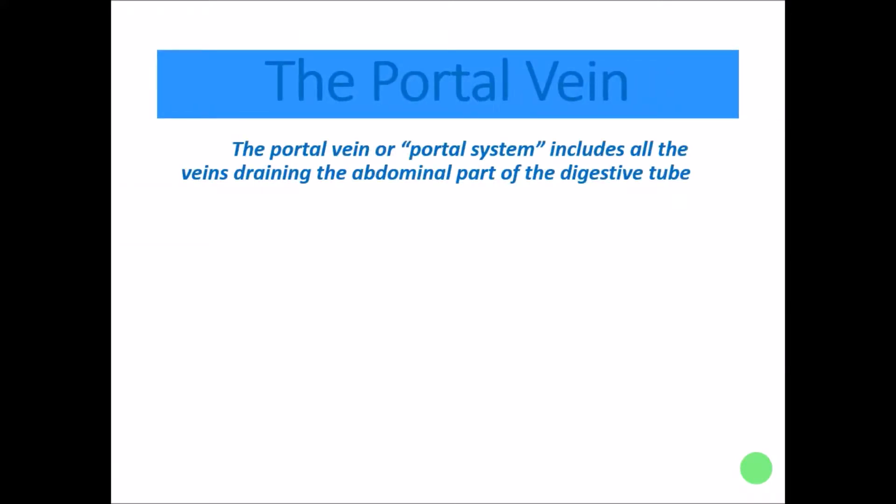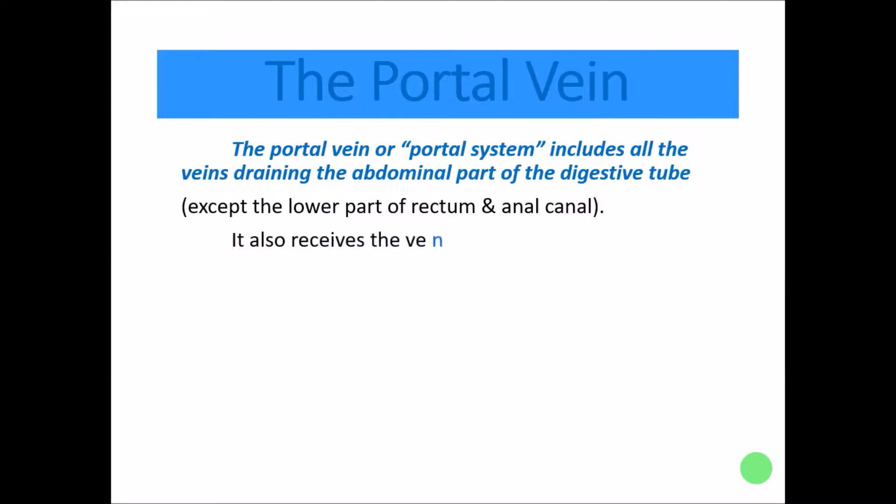The portal vein — the portal system — consists of all the veins draining the abdominal part of the digestive tube. All the veins draining the digestive tube in the abdomen are part of the portal system, and that system drains through the portal vein, except the lower part of the rectum and the anal canal, which drain into the systemic veins.